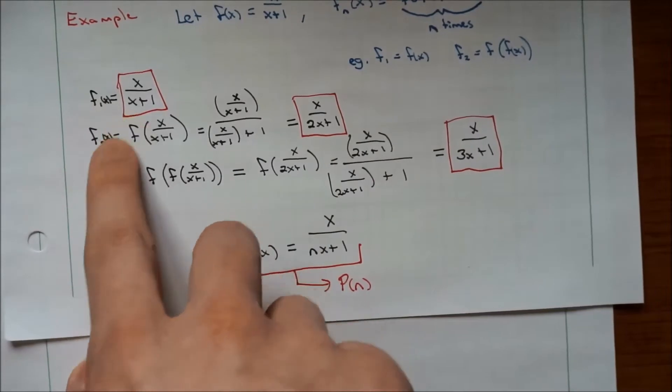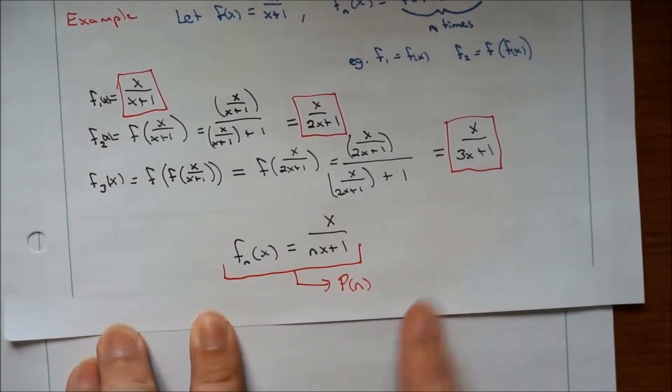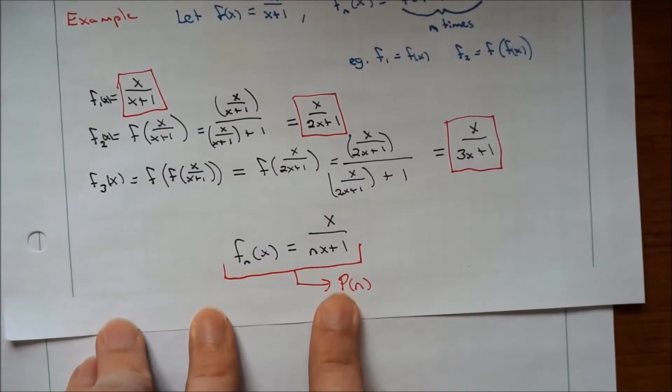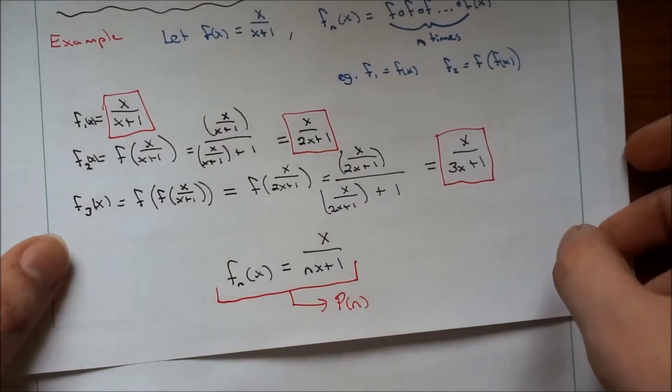So we had f_1, 1x, f_2, 2x, f_3, 3x, right? And that's our P(n) statement that we're now going to try to prove is true.